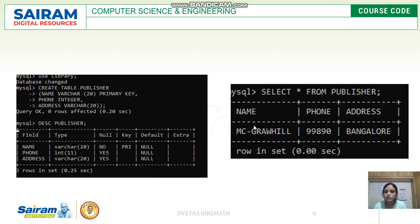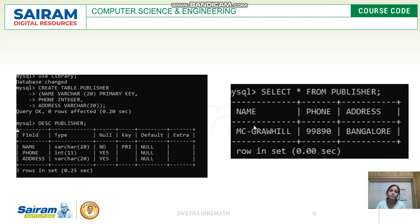This is the next video related to the first experiment. I was explaining about the command DESC publisher. What this command does is display the contents of the publisher table. It consists of fields — a field is the name given to a particular attribute. Name, phone, and address are the three attributes.